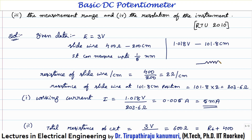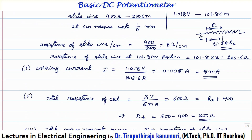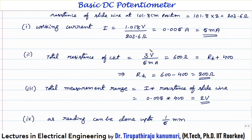The voltage V equals I multiplied by RC, so from this I equals Vc divided by RC — where Vc = 1.018 V and RC = 203.6 ohms — giving 5 milliamperes. Total resistance of the circuit equals total voltage divided by working current = 3 V / 0.005 A = 600 ohms. Out of 600 ohms, 400 ohms is the slide wire, so the remaining value is the rheostat resistance: 600 − 400 = 200 ohms.